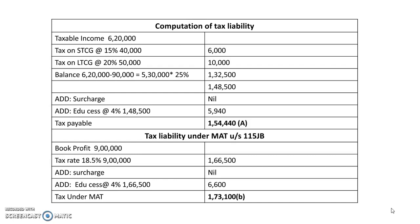To find the balance income, take taxable income of 6 lakh 20,000 and deduct the 40,000 and 50,000 already taxed under capital gains. The remaining balance is 5 lakh 30,000. On this, apply 25% company tax rate, applicable when turnover is less than 250 crores. If turnover exceeds 250 crores, the rate is 30%. Tax on balance comes to 1 lakh 32,500. Total tax is 1 lakh 48,500.